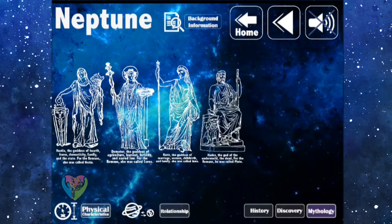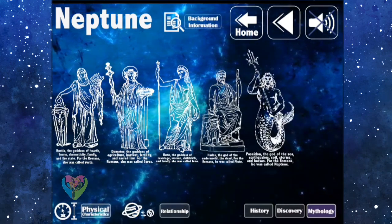4. Hades: The god of the underworld, the dead, and riches. For the Romans, he was called Pluto.